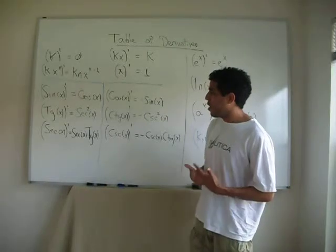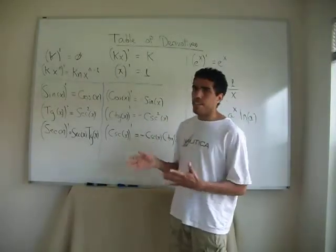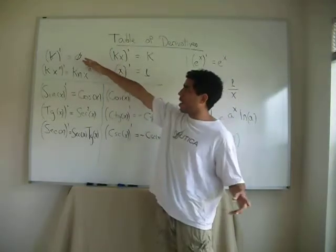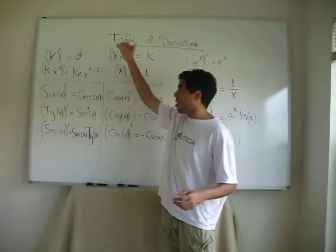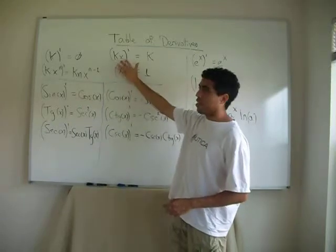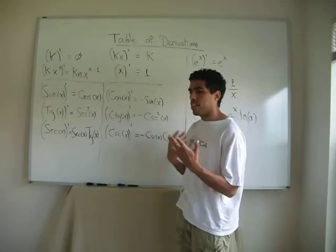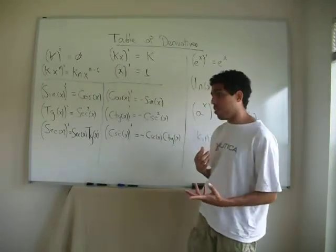Of course, you can always work on the demonstration of why the derivative of a certain function is what it is. For instance, if we have k prime, then the derivative is zero. If we have kx prime, then the derivative of that is k, and so on. You can demonstrate that by using the definition of a derivative.